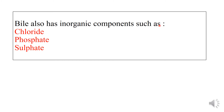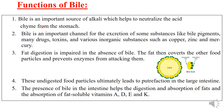Bile also has inorganic components including chloride, phosphate, and sulphate. The functions of bile: bile is an important source of alkali which helps neutralize the acid chyme from the stomach. Bile is an important channel for excretion of substances like bile pigments, many drugs, toxins, and inorganic substances such as copper, zinc, and mercury. Fat digestion is impaired in the absence of bile; undigested fat coats food particles and prevents enzymes from digesting them, leading to putrefaction in the large intestine. Bile also aids in digestion and absorption of fats and fat-soluble vitamins A, D, E, and K.